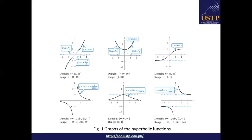Looking at the graphs, we can observe that cosh(x) and sech(x) are even functions. We can see that they are even functions since there is symmetry about the y-axis. Their values satisfy f(x) = f(-x), so they are symmetrical based on the y-axis.